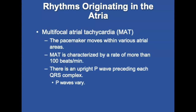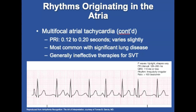Multifocal atrial tachycardia (MAT) involves multiple ectopic sites within the atria depolarizing at different but rapid rates. It is characterized by a rate of more than 100 beats per minute. In effect, MAT is a tachycardic wandering pacemaker with a PR interval that varies based on the pacemaker site, with a PRI of 0.12 to 0.20 seconds. MAT is most often seen in patients with lung disease, pulmonary hypertension, coronary disease, hypomagnesemia, or in patients undergoing theophylline therapy. Treatment is not usually at the prehospital level, and SVT therapies are generally ineffective.